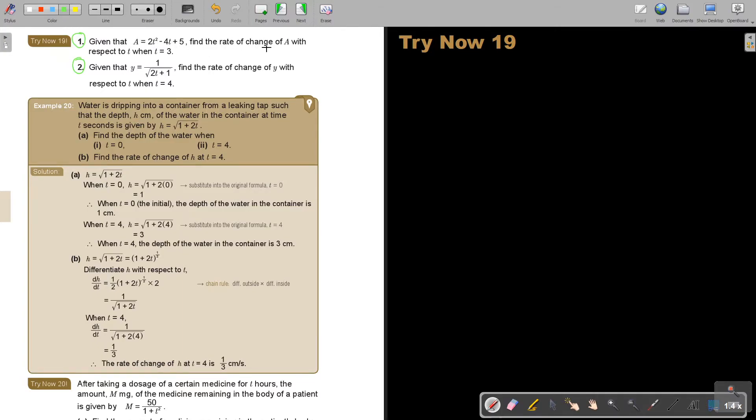Given this, find the rate of change of A with respect to T when T is 3. So, basically, we're just going to start. Let's start with 1. First, write down the formula. Now, we're going to differentiate.